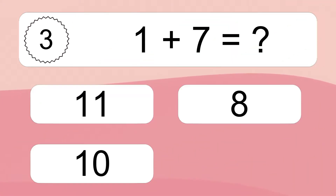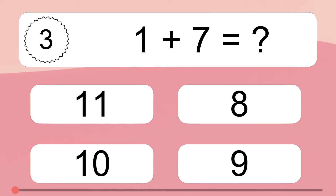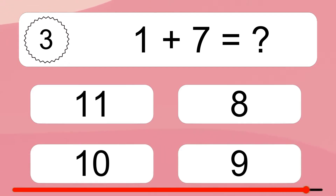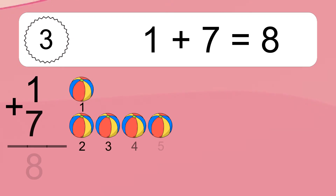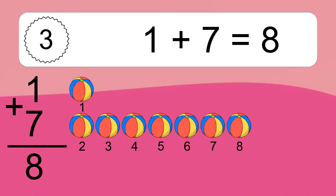1 plus 7 equals what? 1 plus 7 equals 8. Let's count it.